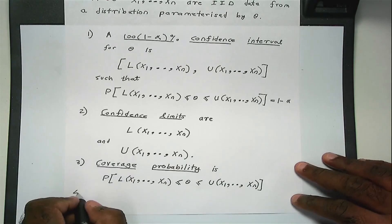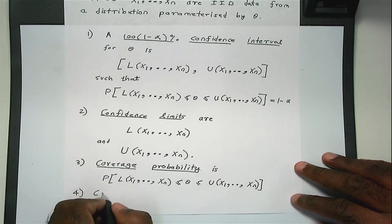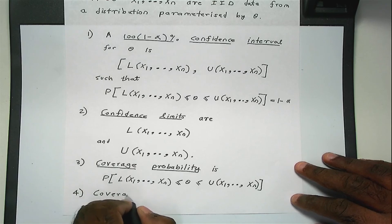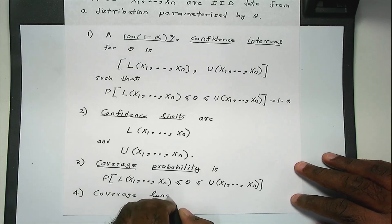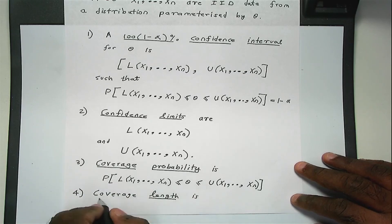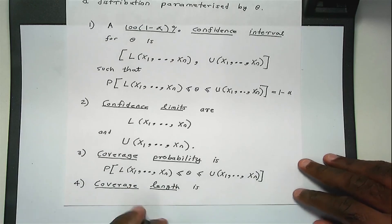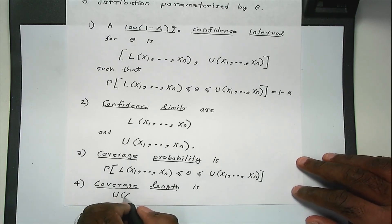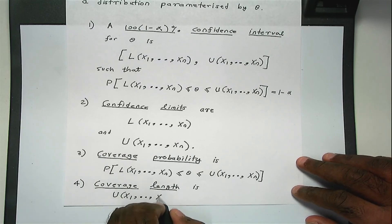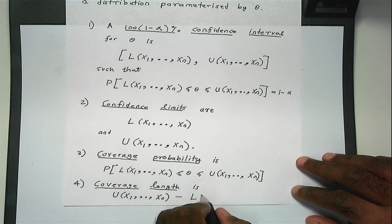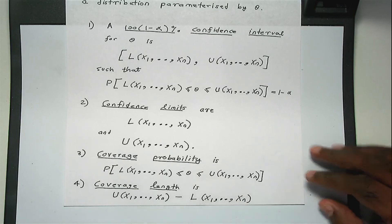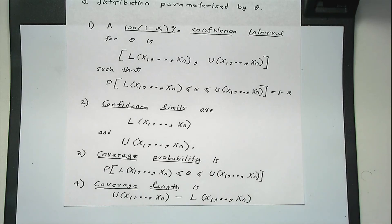And finally, the fourth definition is the coverage length. The coverage length is defined as the difference between the upper and the lower limit. So these are the four definitions that we will need for the later videos. In the next video, I shall talk about one-sample confidence intervals.